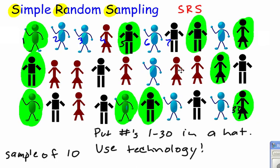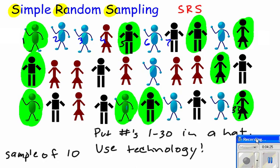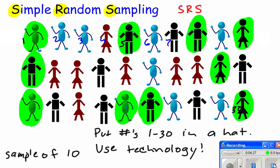So that would be my sample. I just interviewed those 10 people because those were the 10 numbers that came up on my calculator or that I drew out of a hat. That is simple random sampling. And we'll use simple random sampling for our other sampling techniques as well. So make sure that you understand SRS.